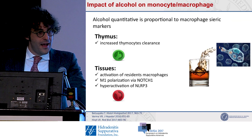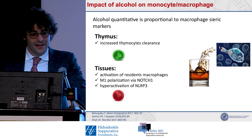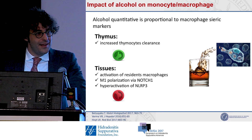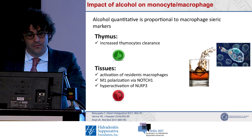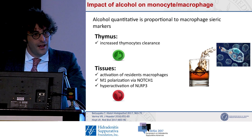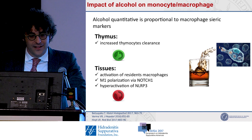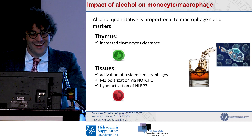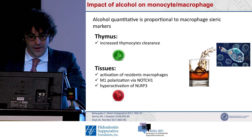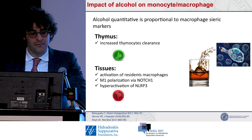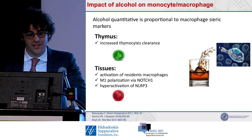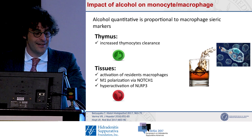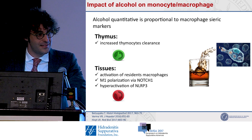Coming back to my topic: in what way does alcohol affect the monocyte-macrophage axis? Our pathologist colleagues found that there is a direct and linearly proportional correlation between alcohol use and macrophagic markers, especially CD163 and CD14.